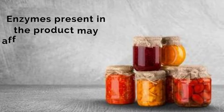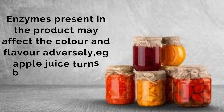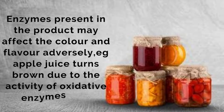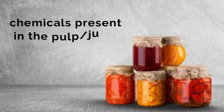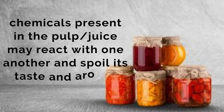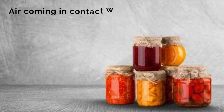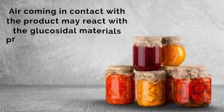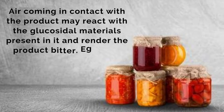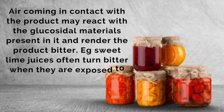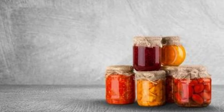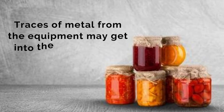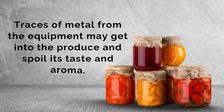Enzymes present in the product may adversely affect colour and flavour; for example, apple juice turns brown due to the activity of oxidative enzymes. Chemicals present in pulp or juices may react with one another and spoil its taste and aroma. Air coming into contact with a product may react with glycoside materials present in it and render the product bitter; for example, sweet lime juices often turn bitter when exposed to air even for a short time. Traces of metal from the equipment may get into the produce and spoil its taste and aroma.